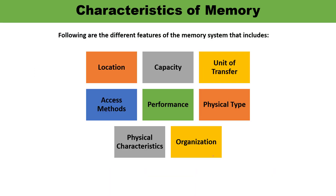Now we are going to talk about the characteristics of memory. Here I have listed eight different parameters — different features of the memory system you must be aware of: location, capacity, unit of transfer, access methods, performance, physical type, physical characteristics, and organization. I will now discuss each of these eight parameters.